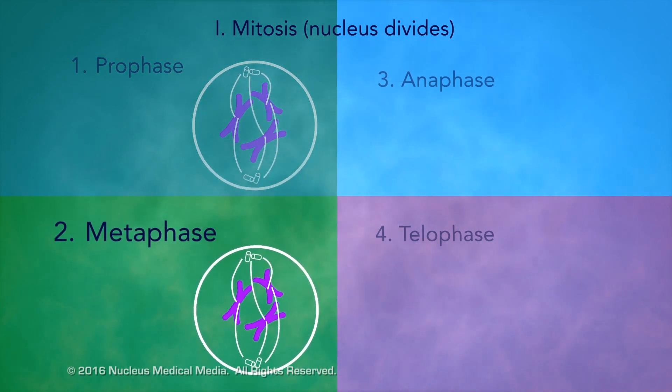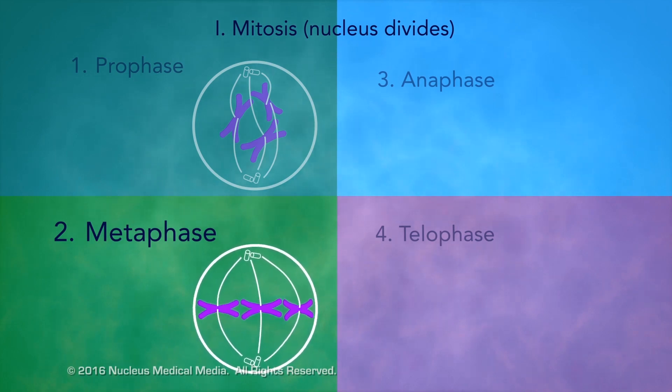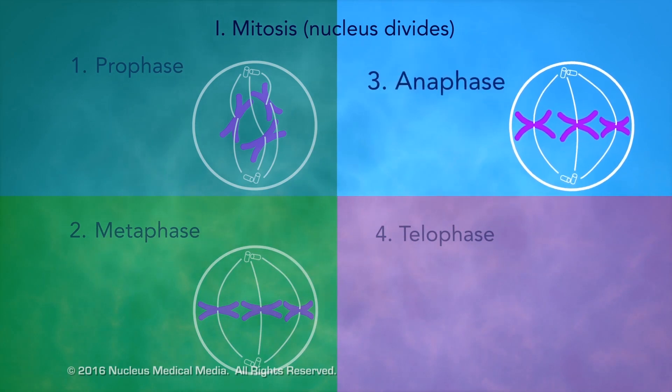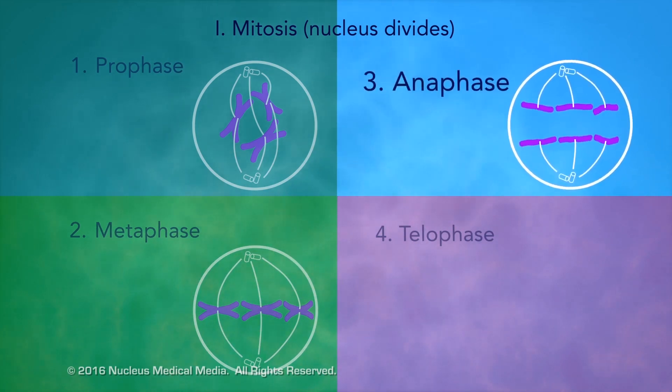During metaphase, spindle fibers align the chromosomes along the cell equator. In anaphase, the spindle fibers separate sister chromatids into two separate groups of chromosomes, pulling them toward the poles.